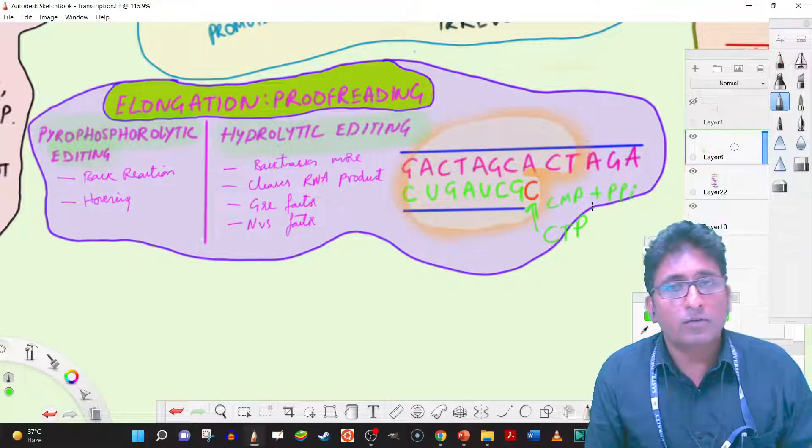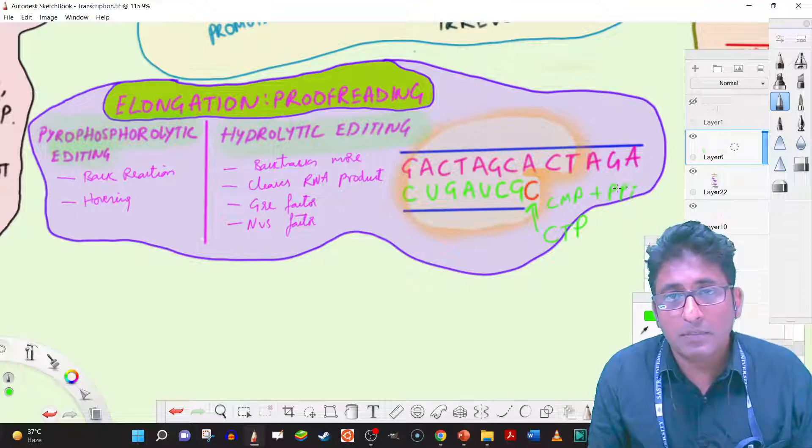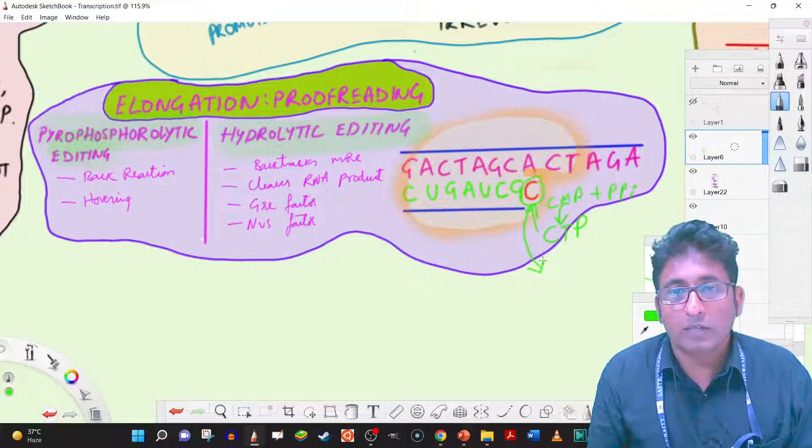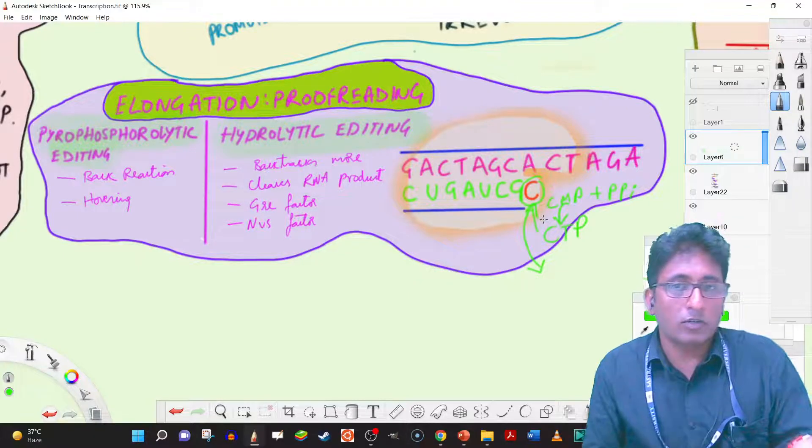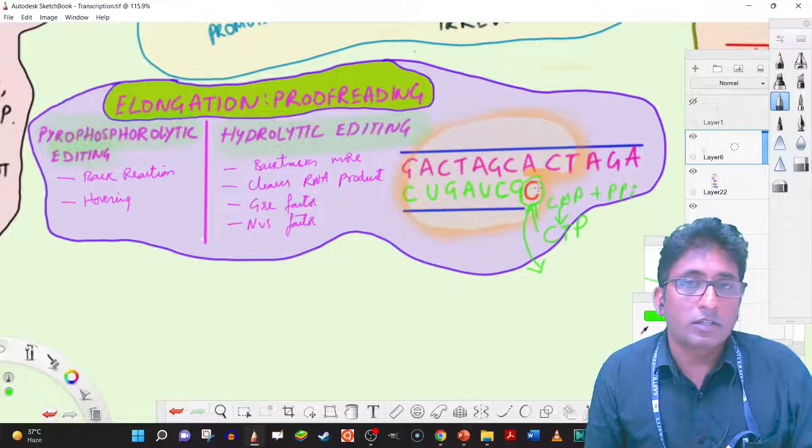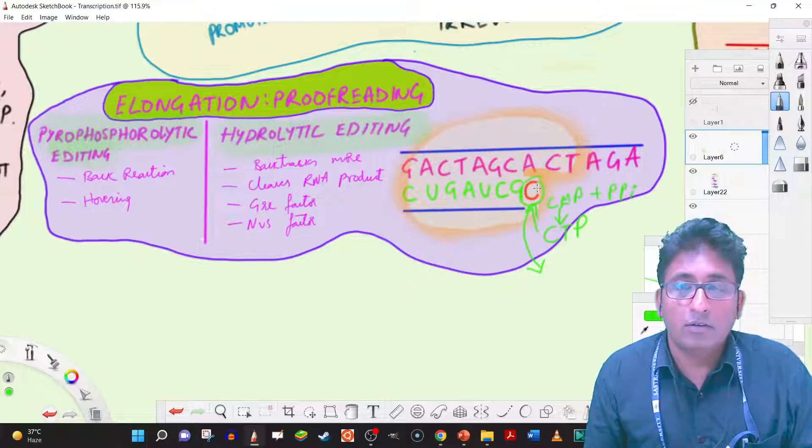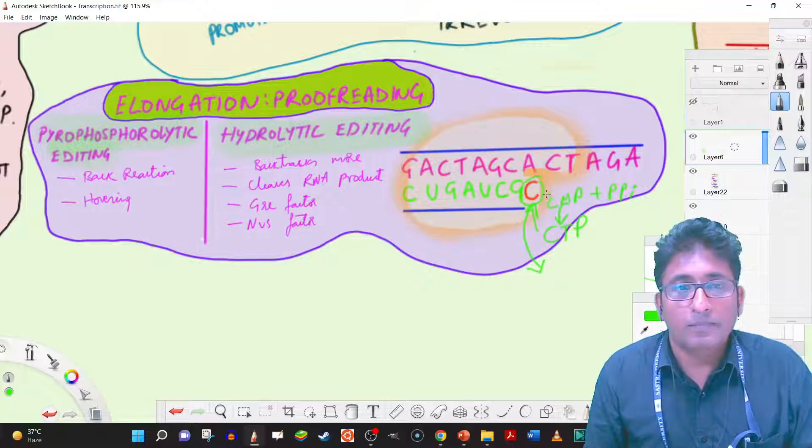So in pyrophosphorylytic editing, this PPi is added back and CTP is made, and this cytosine is removed from the active site. So now uracil could come and it is the correct base against adenine. So it would get incorporated. That is how pyrophosphorylytic editing happens.